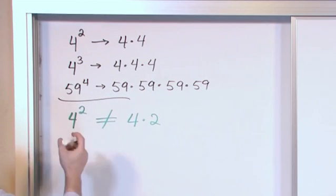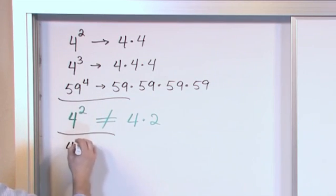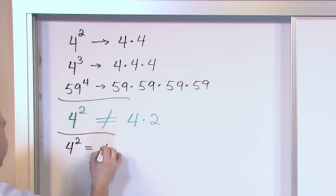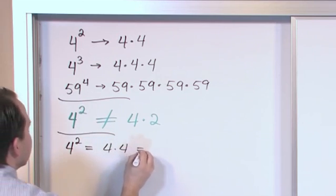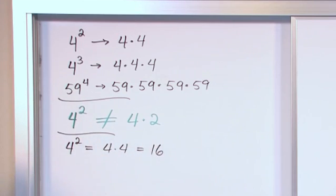So we already talked about it, but I'll just write it down. So for instance, 4 squared is equal to 4 times 4 is equal to 16. That's how you get that.